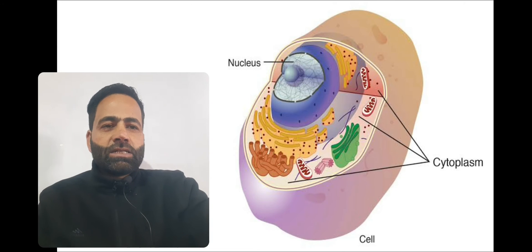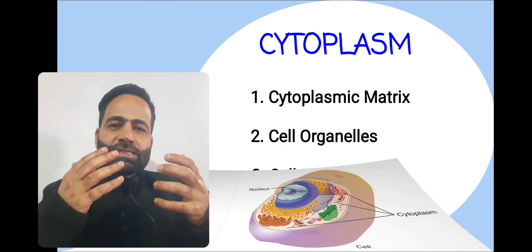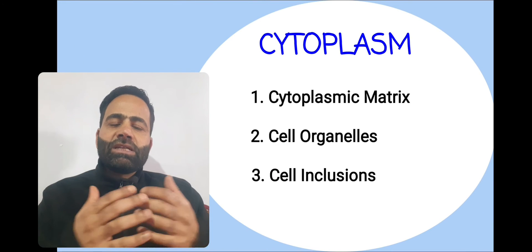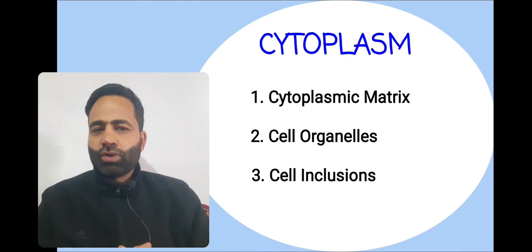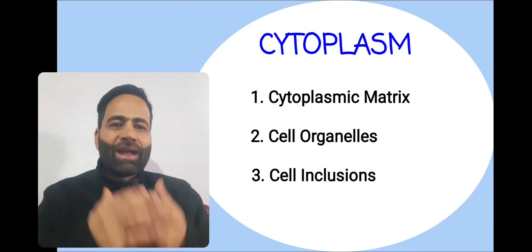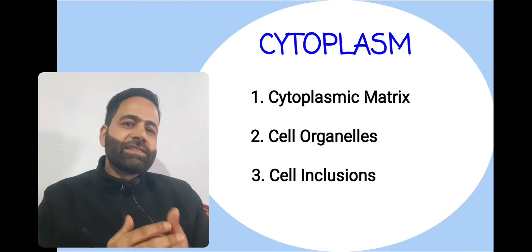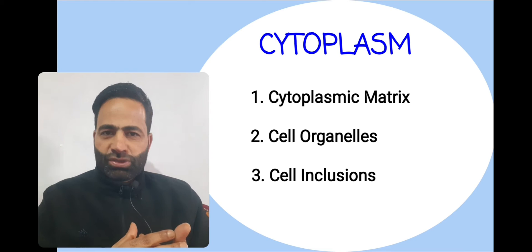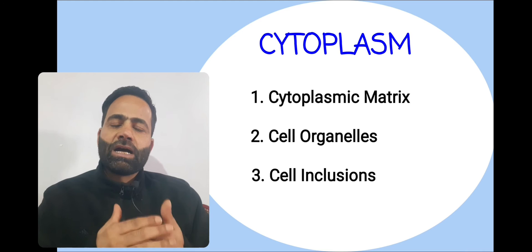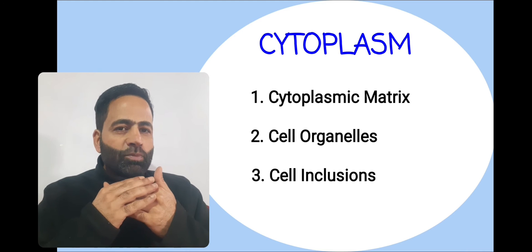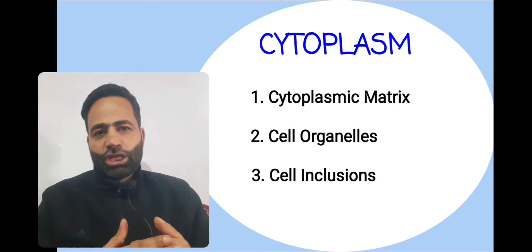The cytoplasm is mainly made up of three components: cytoplasmic matrix, cell organelles, and cell inclusions. So, the three components of the cytoplasm are cytoplasmic matrix, cell organelles, and cell inclusions.